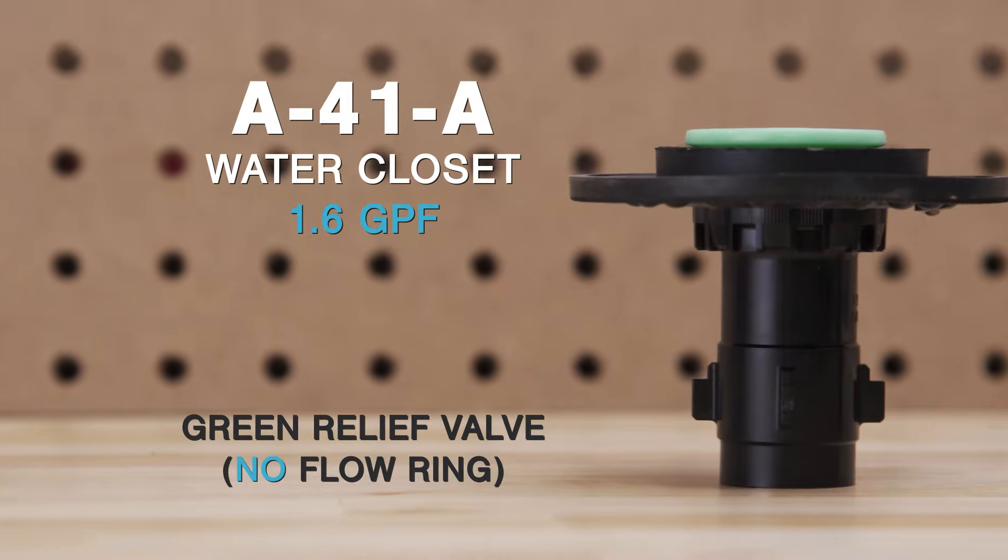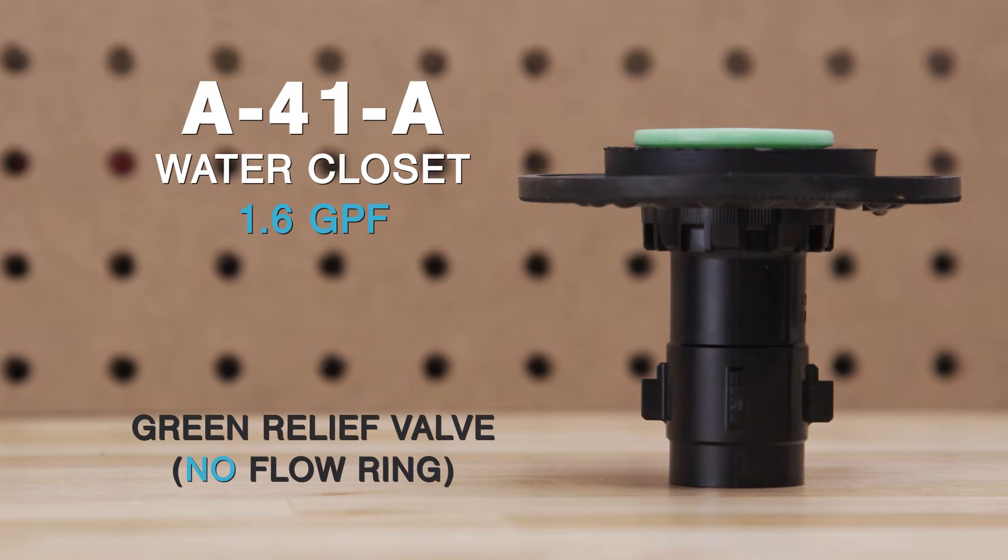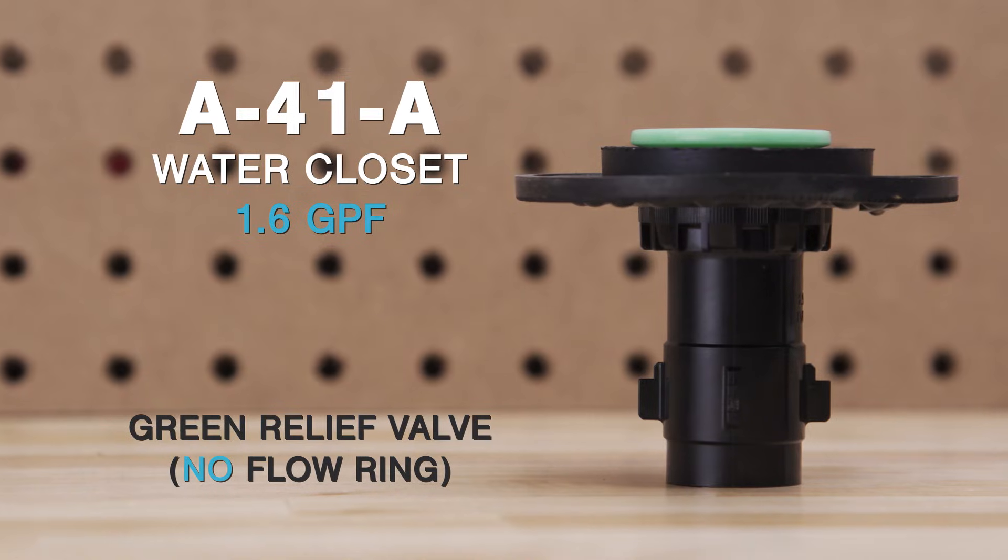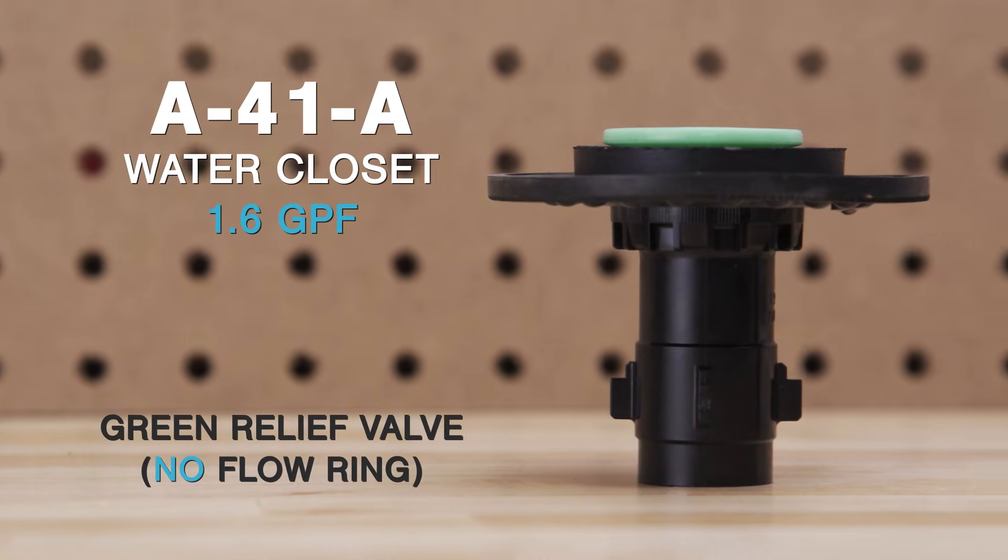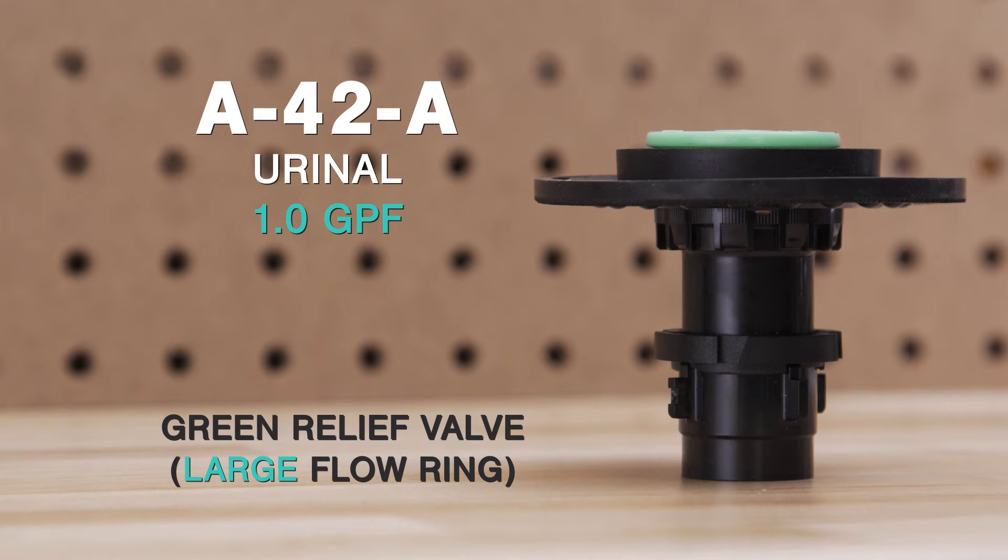Additionally, each guide assembly uses different flow rings to restrict the water flow. When relief valves are paired with a specific guide assembly, a variety of different flush volumes can be achieved, so be sure to select the right diaphragm kit.